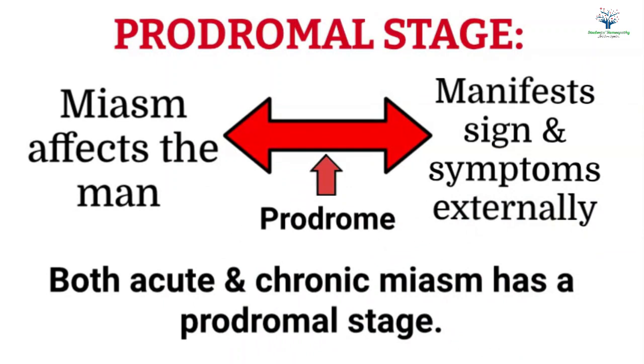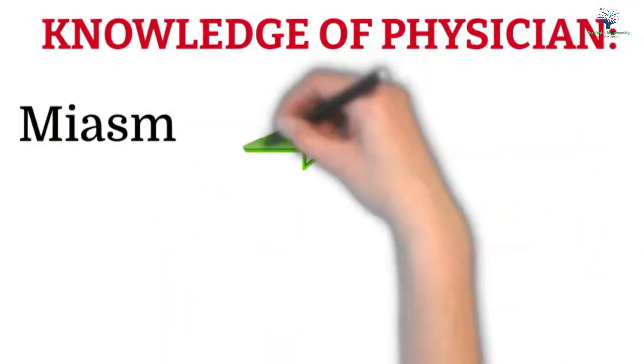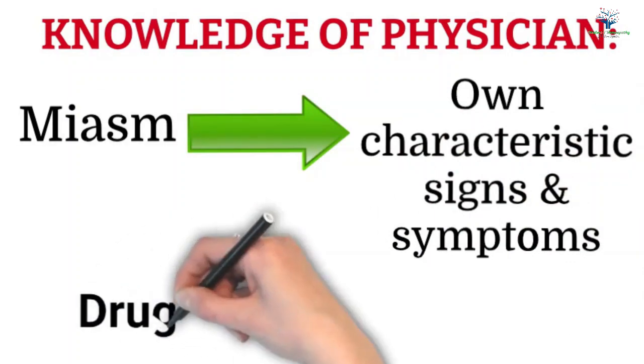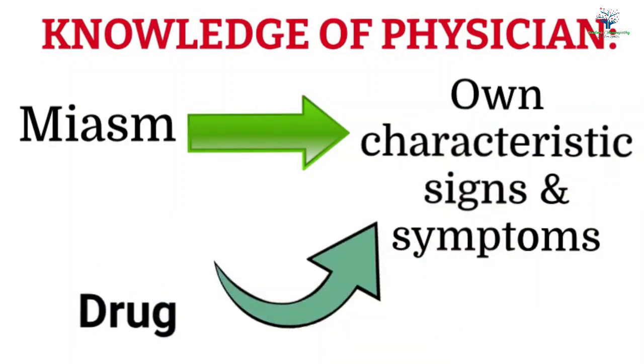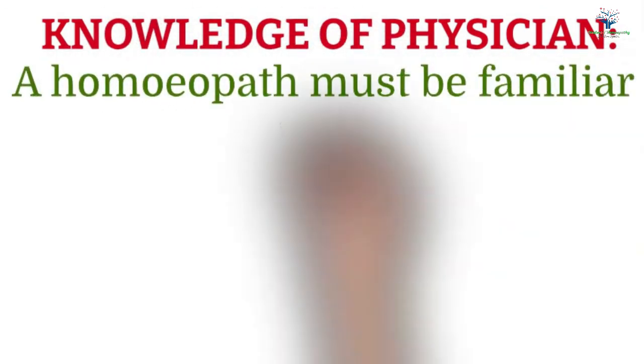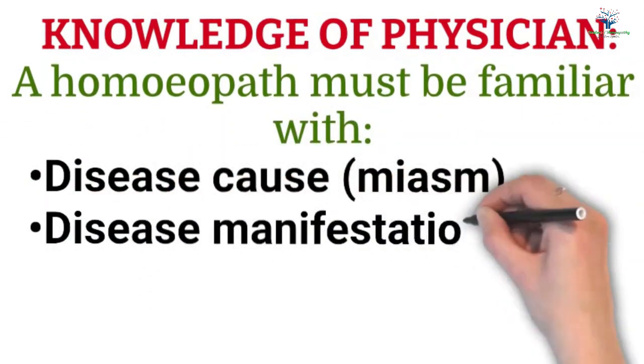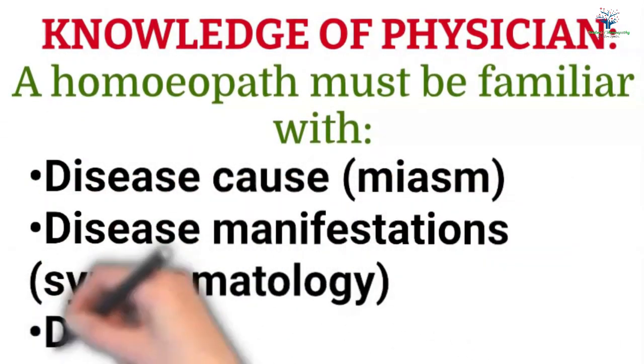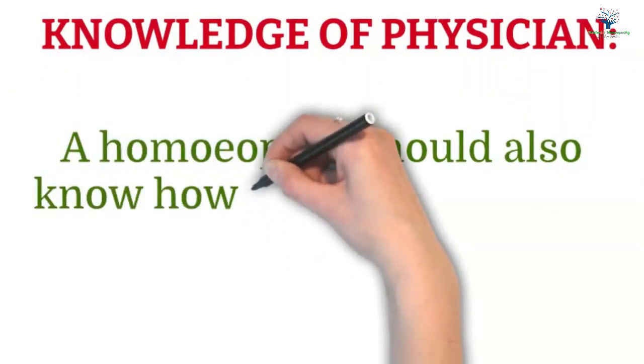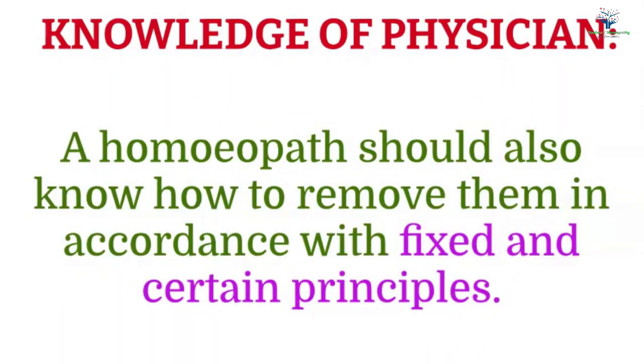Kent further tells in this chapter in regard to the knowledge of physician, each miasm produces its own characteristic signs and symptoms in men. The same is true for drugs as well. According to Hahnemann, a homeopath must be familiar with disease cause or miasms, disease manifestation or symptomatology, and drug manifestations. He should also know how to remove disease manifestation in accordance with fixed and certain principles.